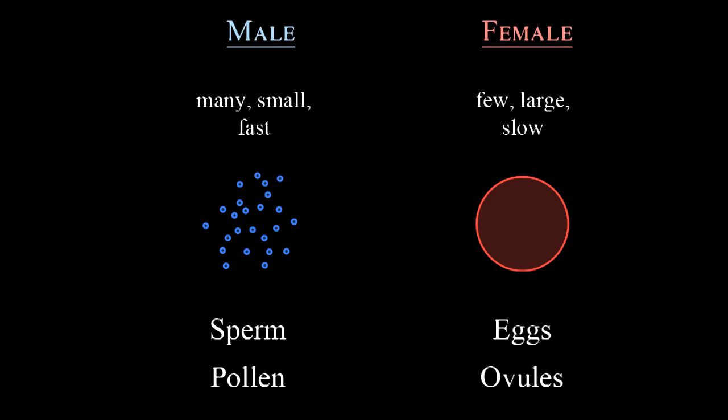We have two strategies giving us two sexes, males and females. Males produce many small, fast-moving gametes like sperm for animals and pollen for plants. On the other hand, females produce just a few big gametes like eggs for animals and ovules for plants.